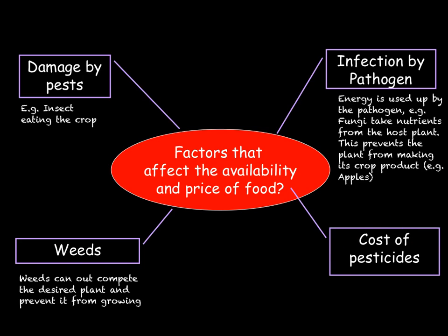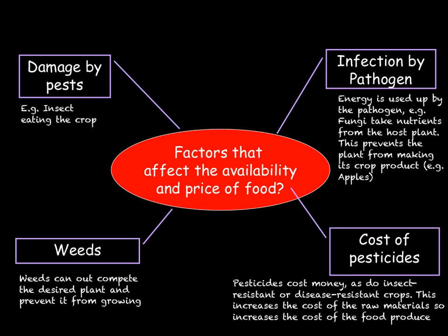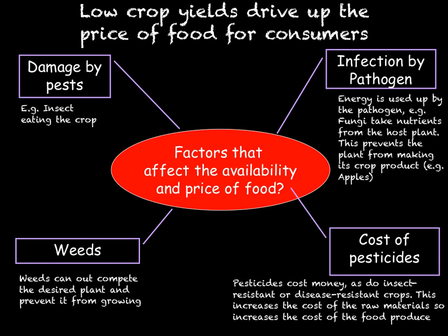Finally, we also have the cost of pesticides. By spraying pesticides onto your crops — for example, fungicides to kill fungi or insecticides to kill insects — you are cutting into your profit margin. You could also decide to grow more expensive insect-resistant or disease-resistant plants, but again this drives up the overall cost of food as the cost of raw materials will be higher. Any sort of low crop yield caused by weather or other extraneous factors is also going to drive up the price of food for consumers.